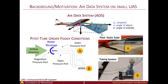It only consists of a pitot tube, a transducer, and some plastic tubes. This air data system is simple but prone to fault. One of the most common fault modes is water blockage fault. The figure on the left shows how this fault occurs during a rainy or foggy day, which can be a safety threat.